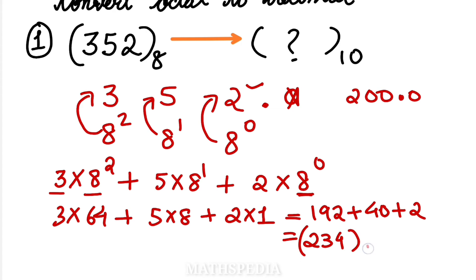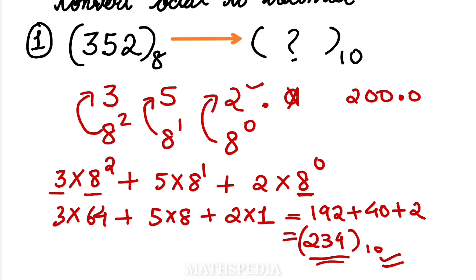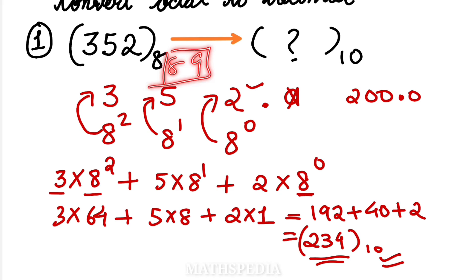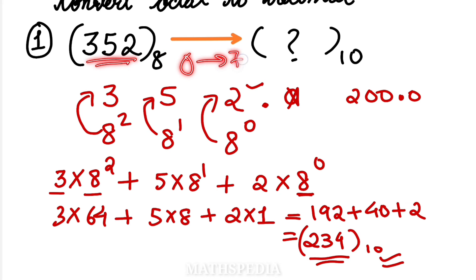When converting to decimal, the result will always contain digits from 0 to 9. Also note: since octal numbers only contain digits 0 to 7, you won't see 8 or 9 in the original octal number — that's the simple logic to remember.